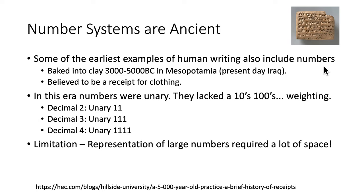Now in this era, numbers were unary. That is, they lacked the tens place and the hundreds place and the associated weighting that we would have with these different decimal places. So if you wanted to write a decimal 2, you just made two hash marks. Decimal 3, three hash marks, and so on. So you can appreciate there's a real limitation here for large values—they would require a lot of space.